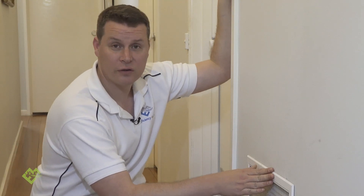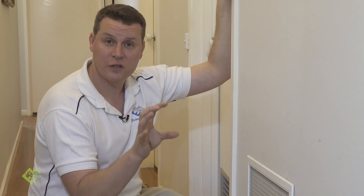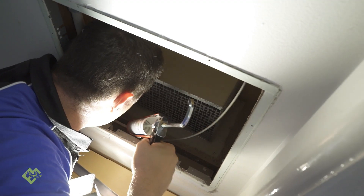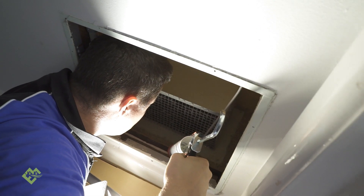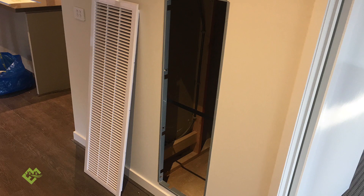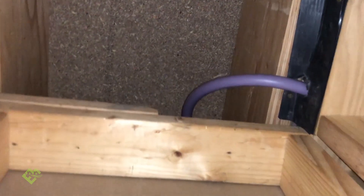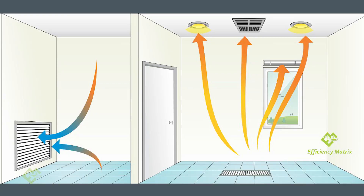A leaky return is a little bit similar to driving your car with the heater on and your window open. It's really important that the return is as airtight as possible, because whatever air is getting sucked in directly from outside via the return, you will be pressurizing on the supply side to push outside of the building envelope.